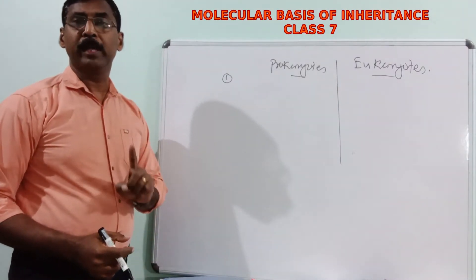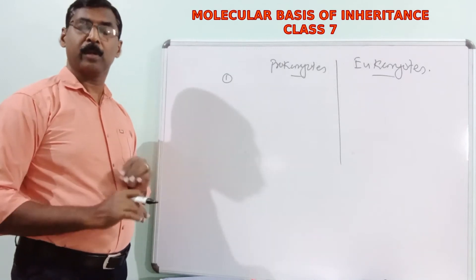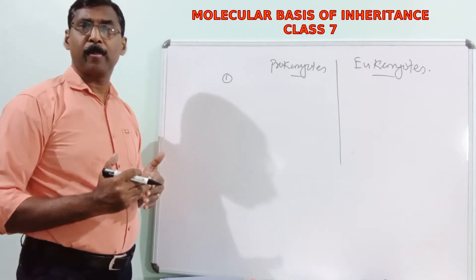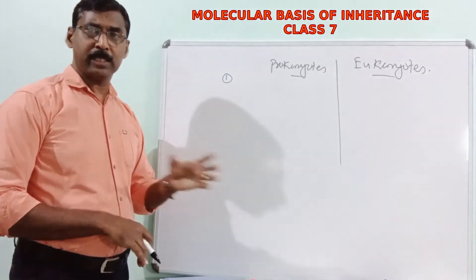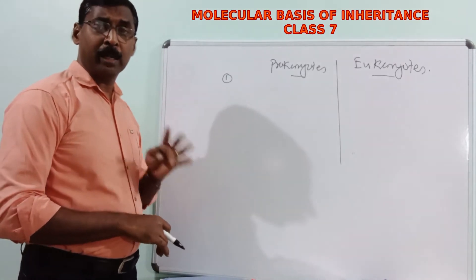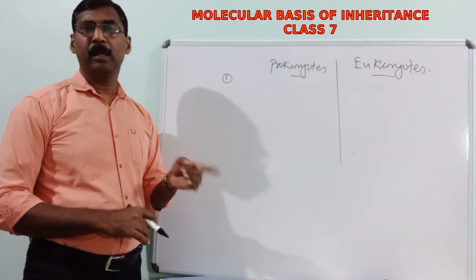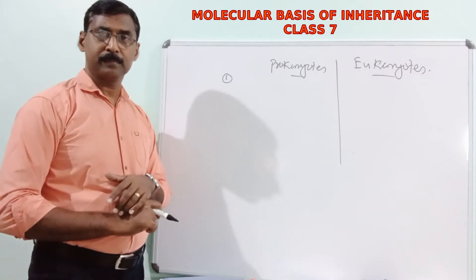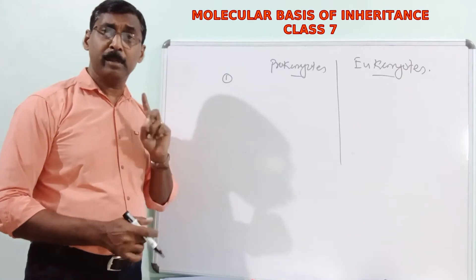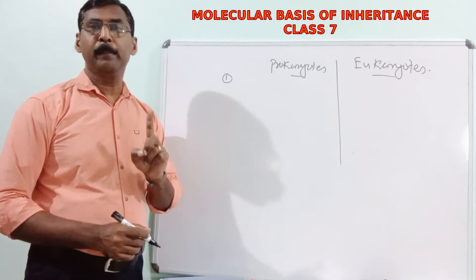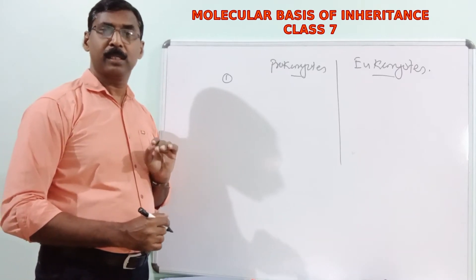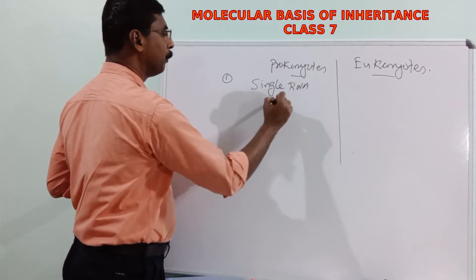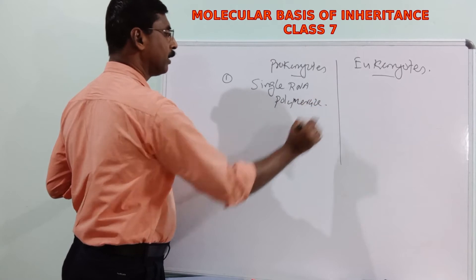In prokaryotes, only one RNA polymerase is present, and that single polymerase transcribes all the RNAs — mRNA, transfer RNA, and ribosomal RNA. All three RNAs required for protein synthesis or translation are transcribed by this single RNA polymerase.